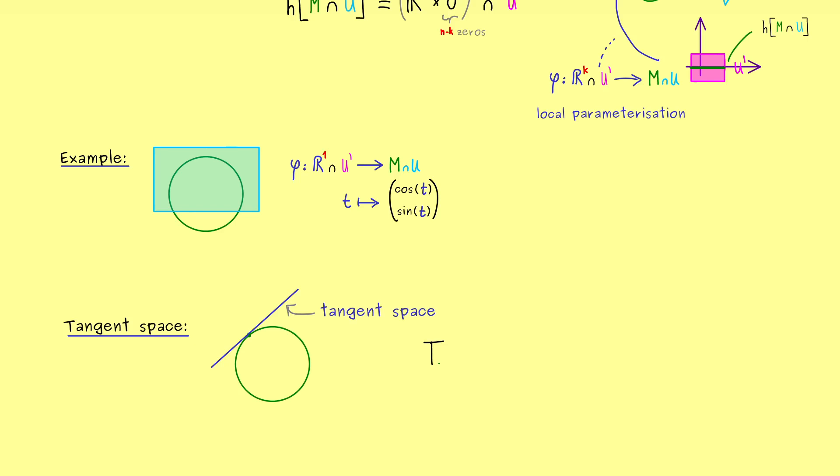First, let me tell you that we'll use an index p for denoting the point from the manifold. Moreover, I will put the word 'sub' to the T to say that we deal with submanifolds here. Hence, this T_p^{sub}M denotes the tangent space for submanifolds in R^n, in contrast to the abstract definition later.